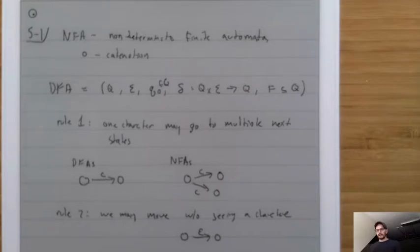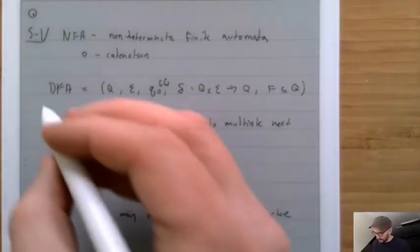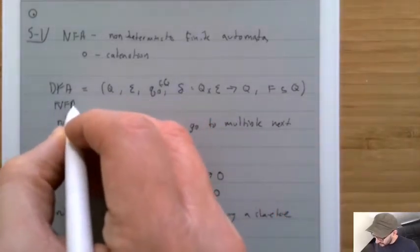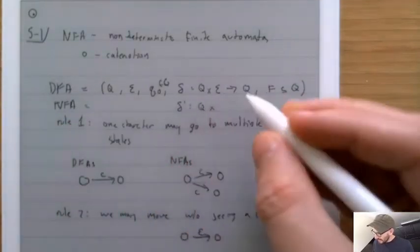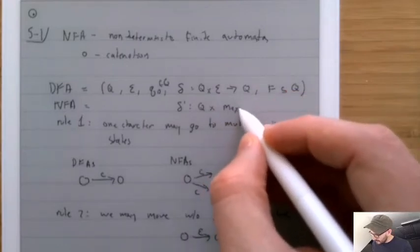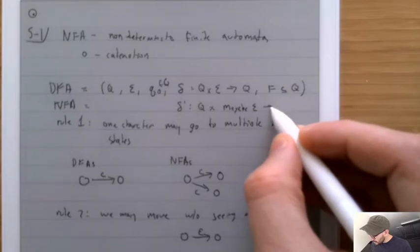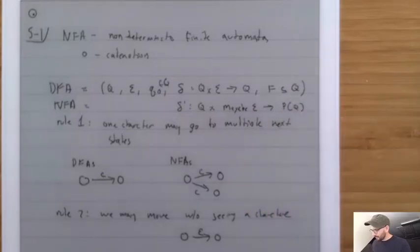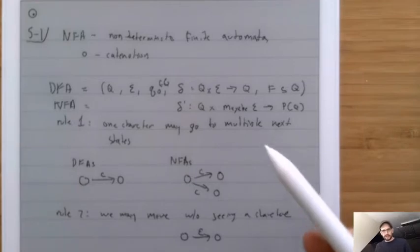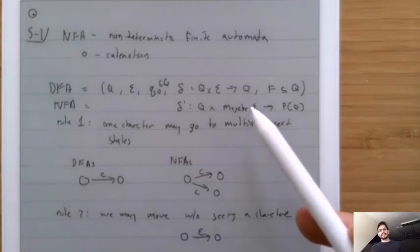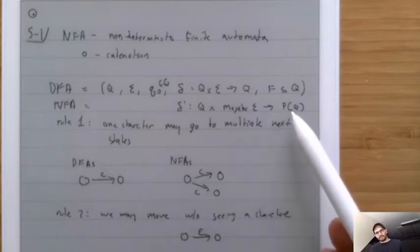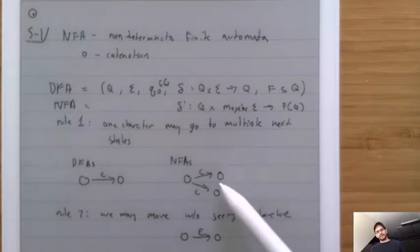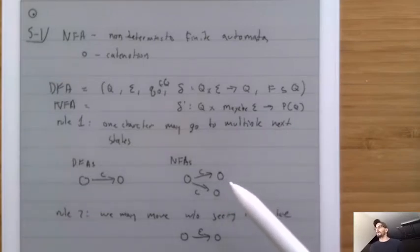NFAs are going to be formalized almost exactly the same as DFAs. The one difference is in the delta function. The NFA delta function takes a Q and a 'maybe sigma' — meaning a character or epsilon — and returns an element of the power set of Q. That means every time we transition, we could go to any subset of the other states — one or more of them.